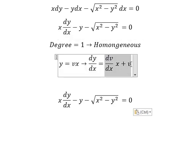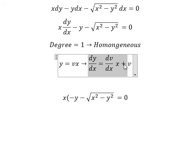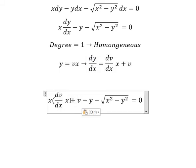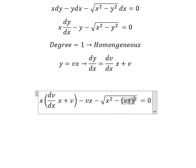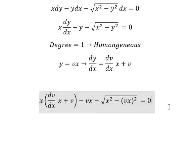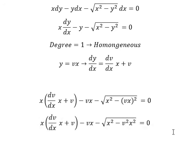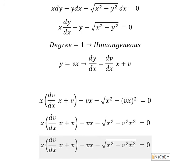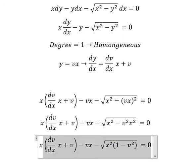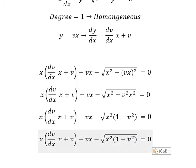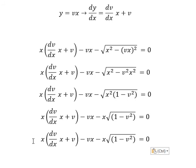We substitute this into the equation, replacing y with vx. Now we simplify x squared. We have v squared x squared. We can factor out x squared. The square root of x squared gives us x.